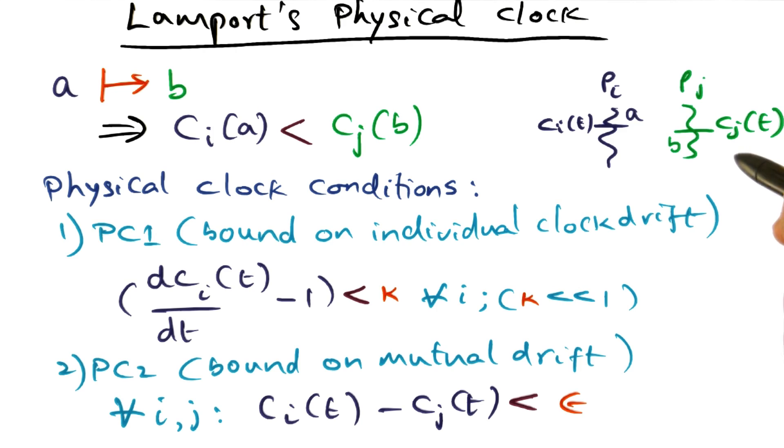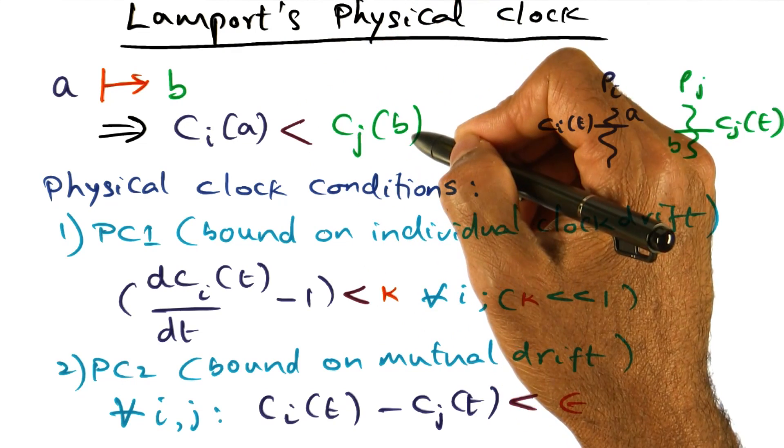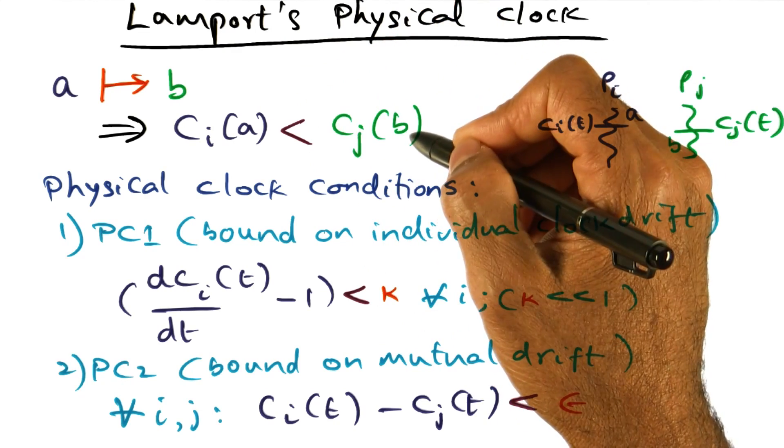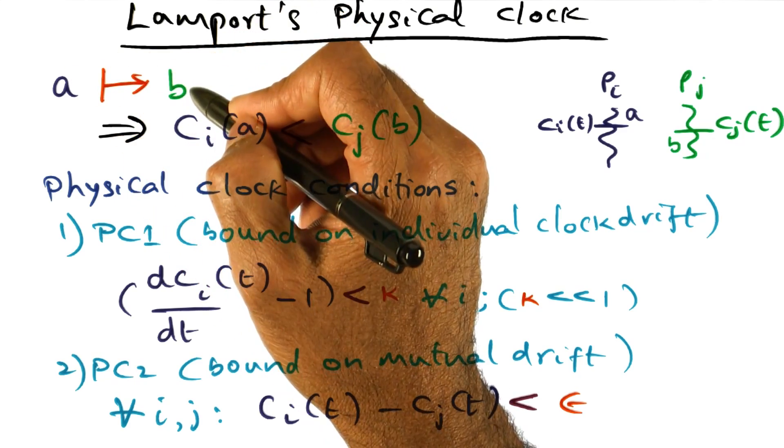And what we want to make sure is that the time stamp associated with A has to be less than the time stamp associated with B, if I want to guarantee that A in real time happened before B.